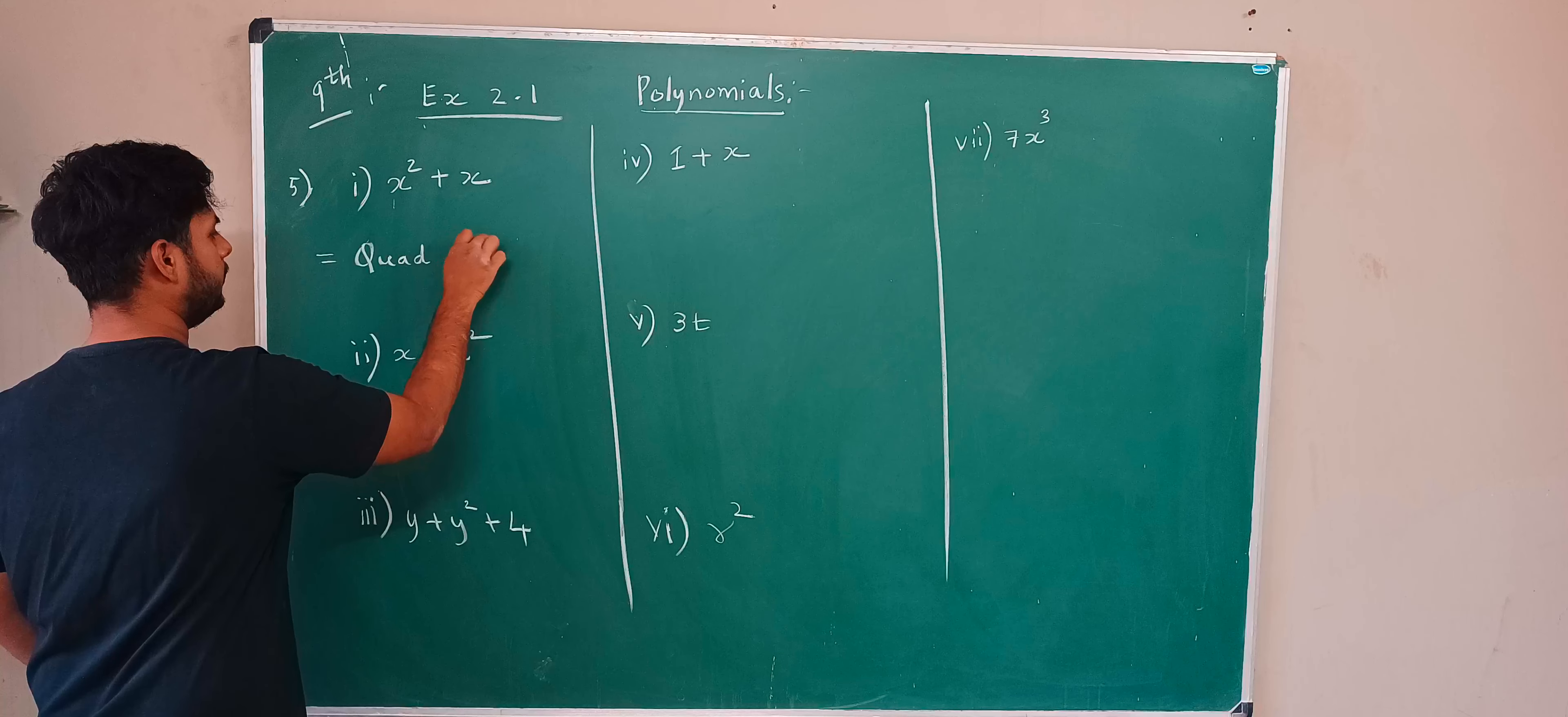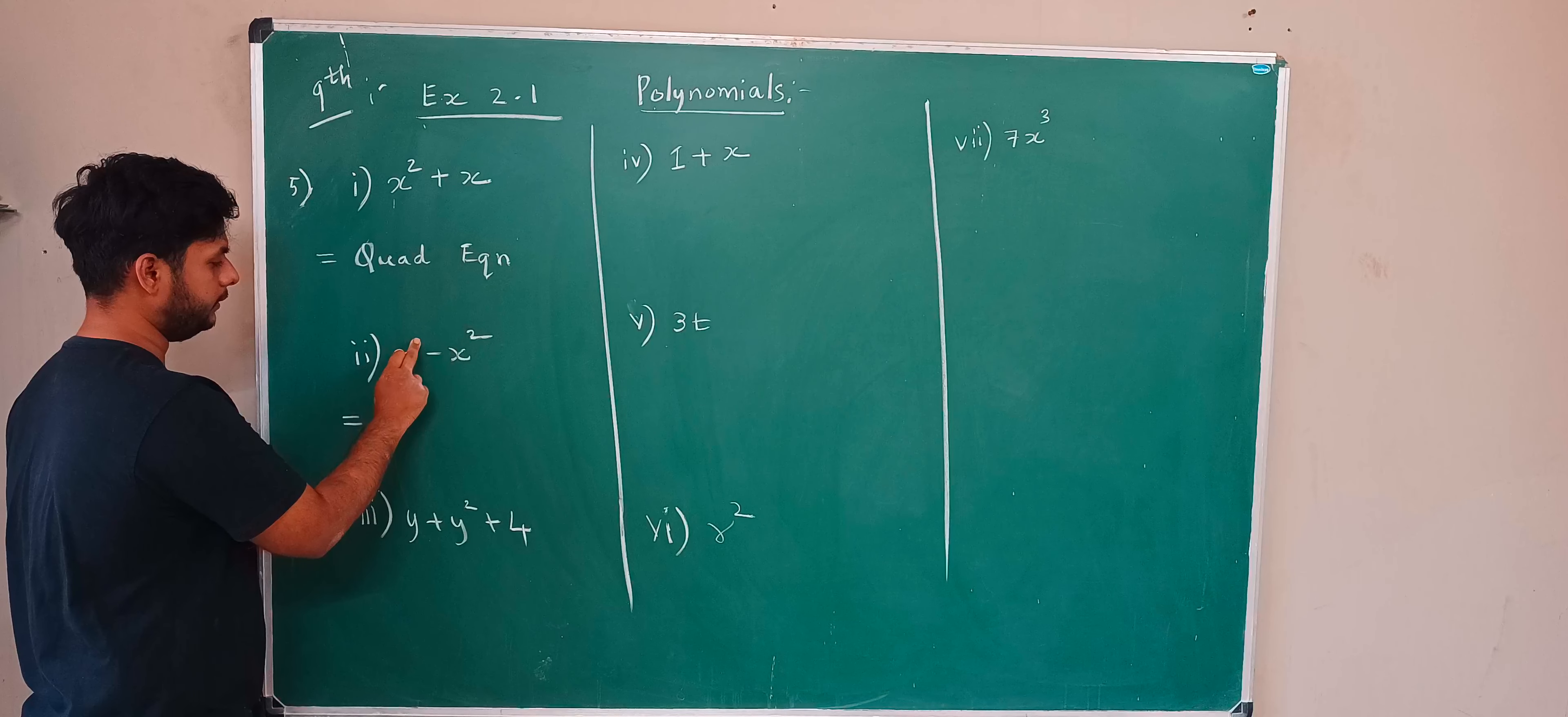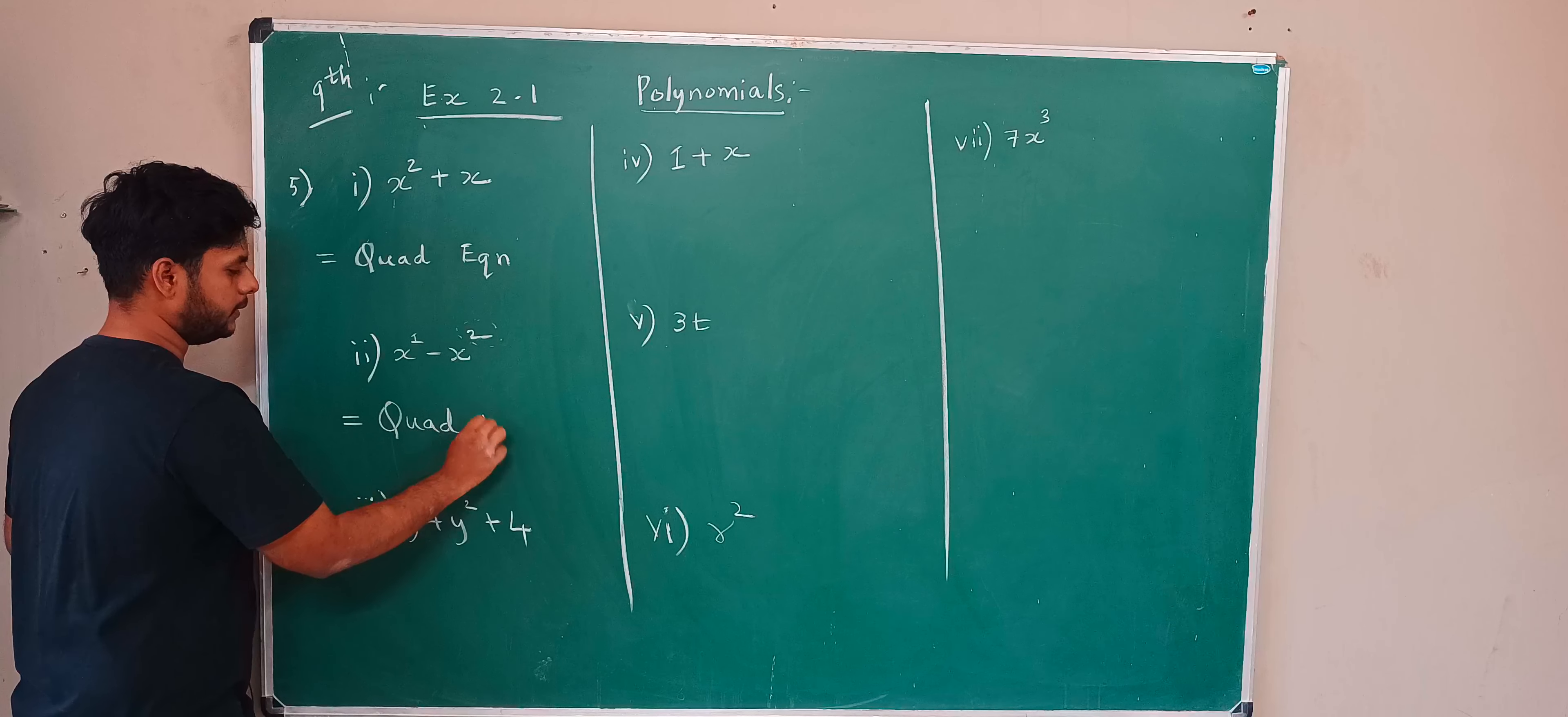Or not, this is a quadratic equation. Next here I have x square, here x power 1 is there, here 1 is there, here 2 is there. So this is bigger, so it is also quadratic equation.